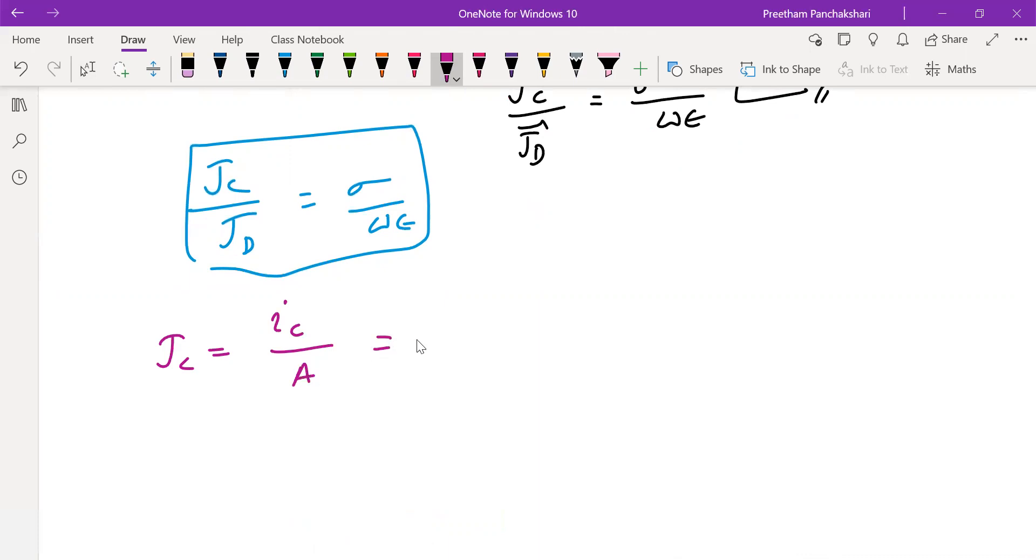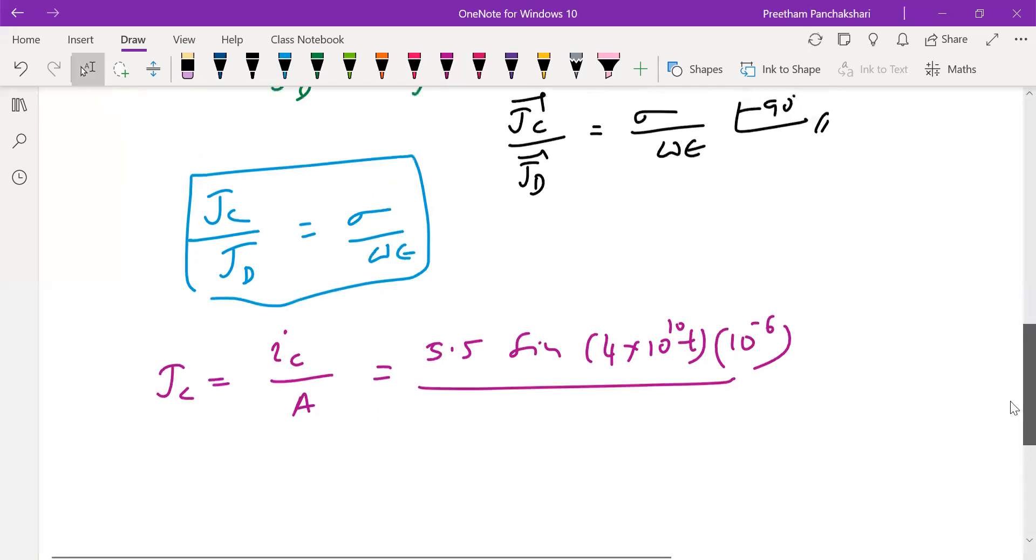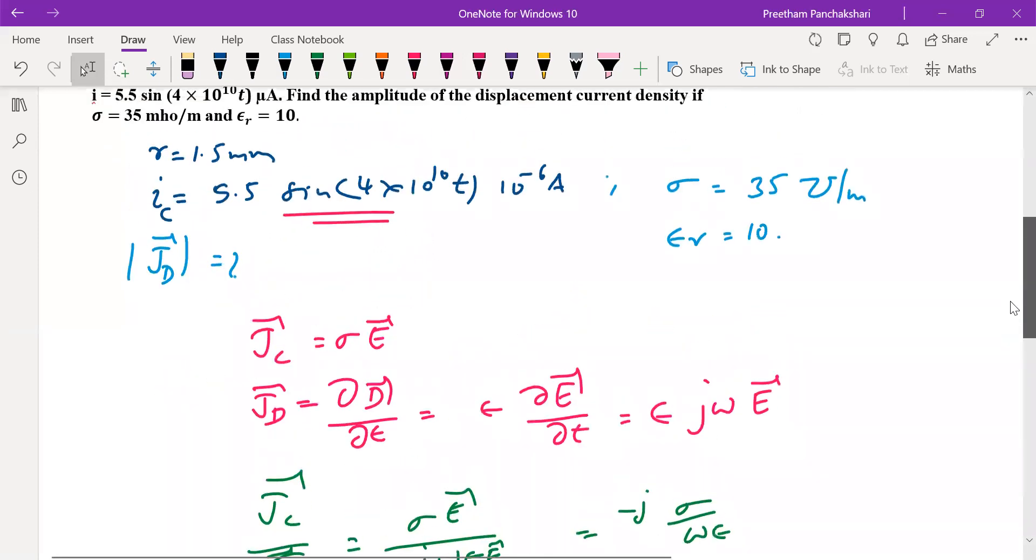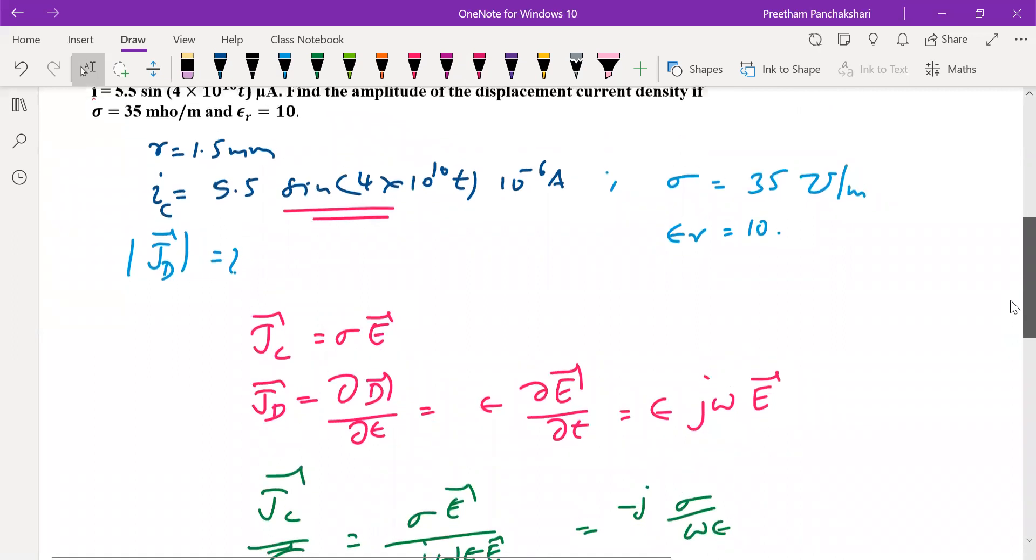Take conduction current divided by area, will get conduction current density for uniform distribution of current. So it is given as 5.5 sin(4×10^10 t) microamps. I guess this is the case. Let us check the equation before we continue.